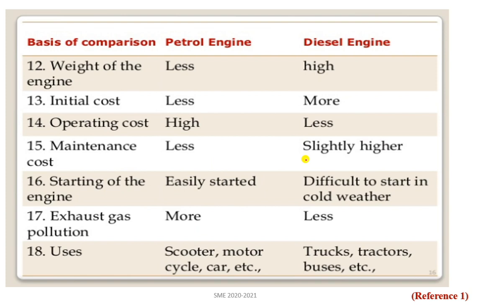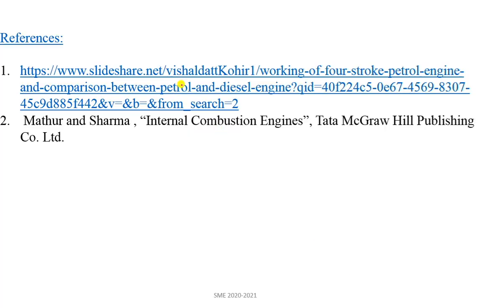On exhaust emissions: diesel engines are generally perceived to cause more air pollution, but higher carbon content is also present in petrol engine exhaust. This is debatable and depends on the engine type and accessories. In general, diesel engines cause less pollution than petrol engines. Petrol engines are used in scooters, motorcycles, and cars; diesel engines are used in heavy-duty applications like trucks, tractors, and buses.